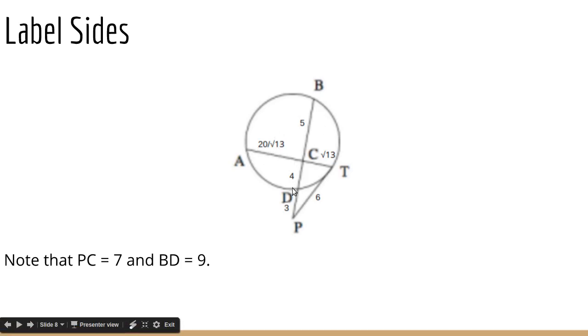And we now know BD, since we have both BC and CD. So BD equals 9. So how do we find the radius, now that we've found all of the sides on this diagram? Well, at this point I was stuck, personally, because they never gave us what the center of the circle is, so we don't really know where the center is.